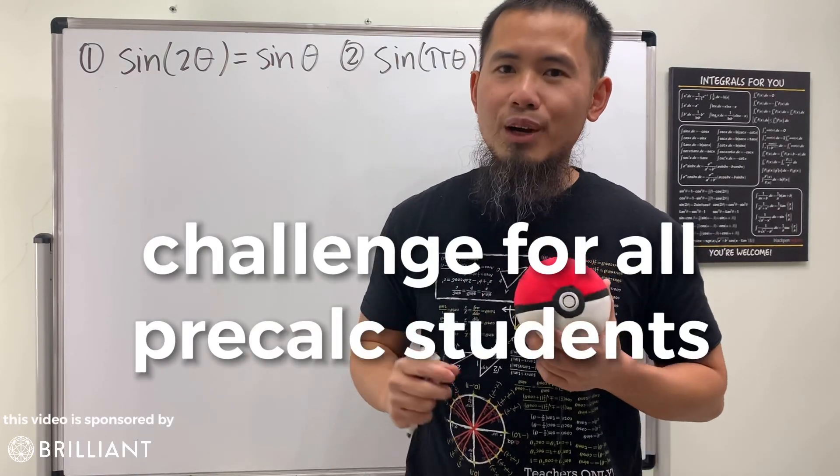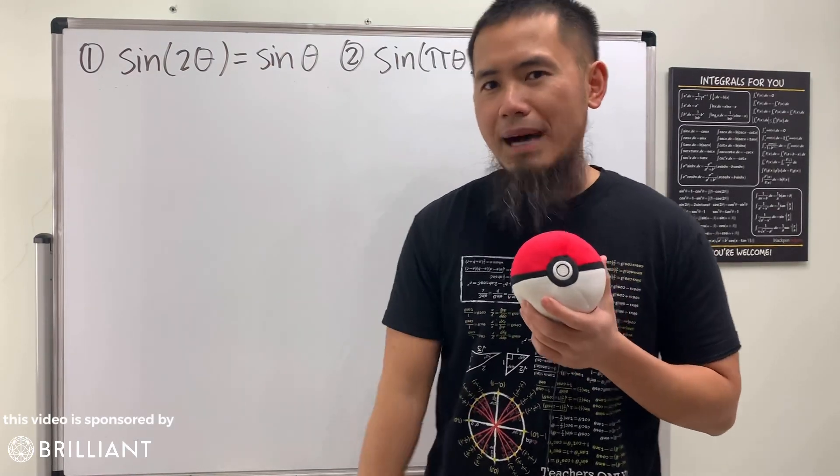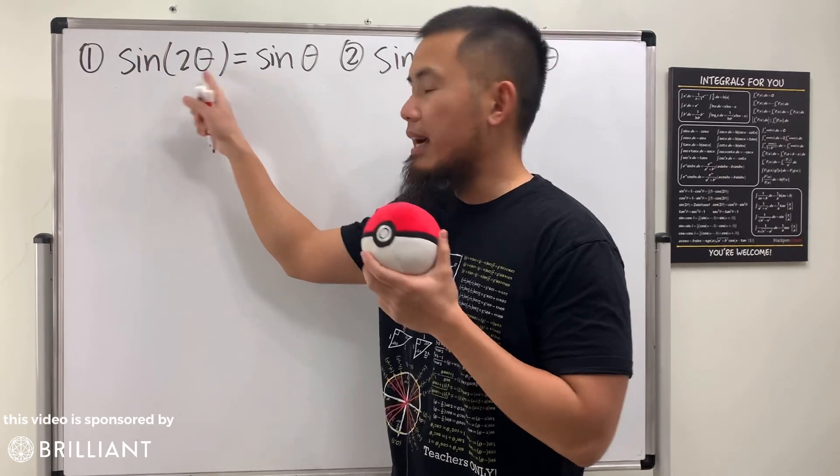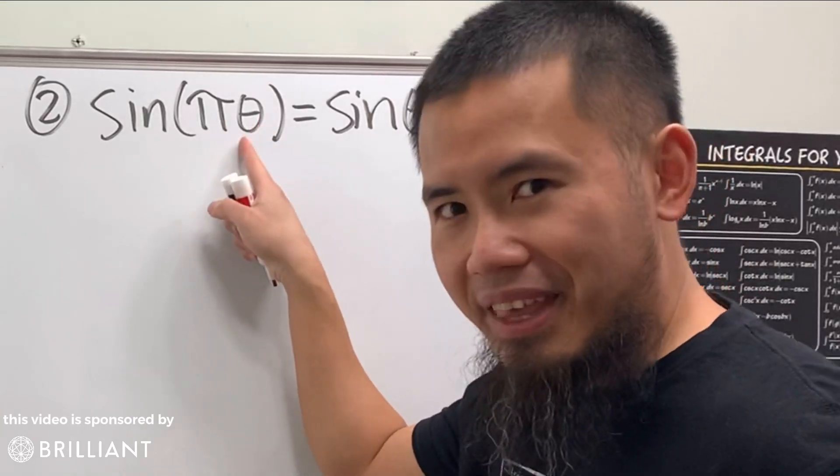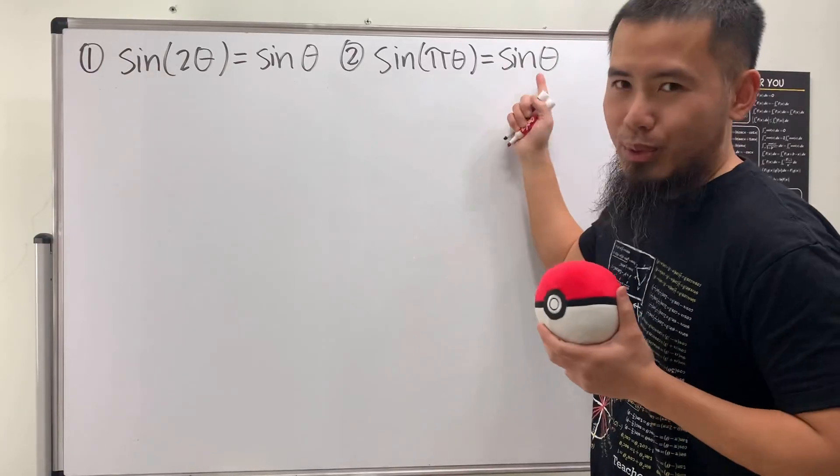Okay, this is a challenge for all the pre-calculus students. We have two equations on the spot. The first one is sine of 2 theta is equal to sine theta. And for the second one, we have sine of pi theta. That's equal to sine theta.